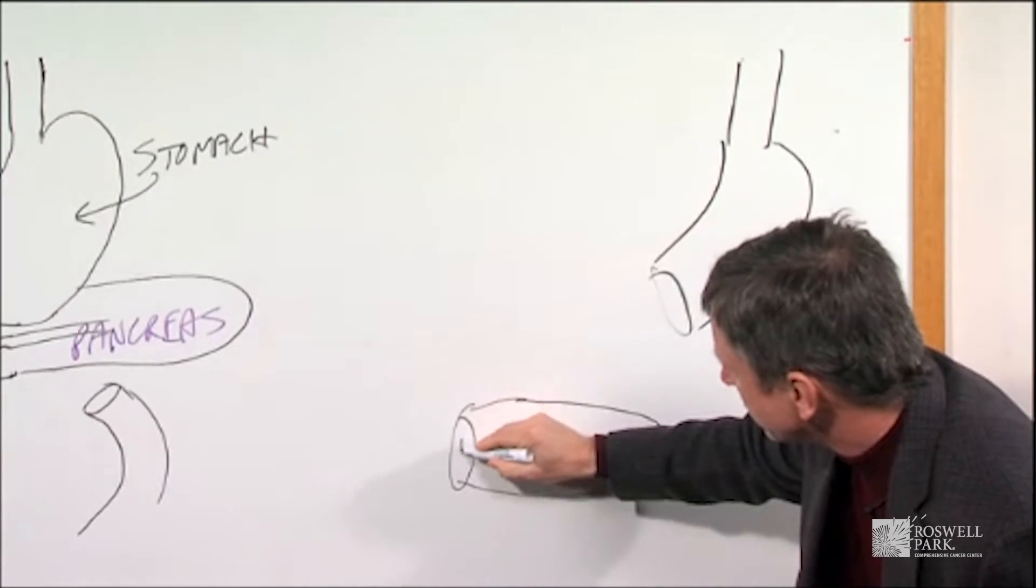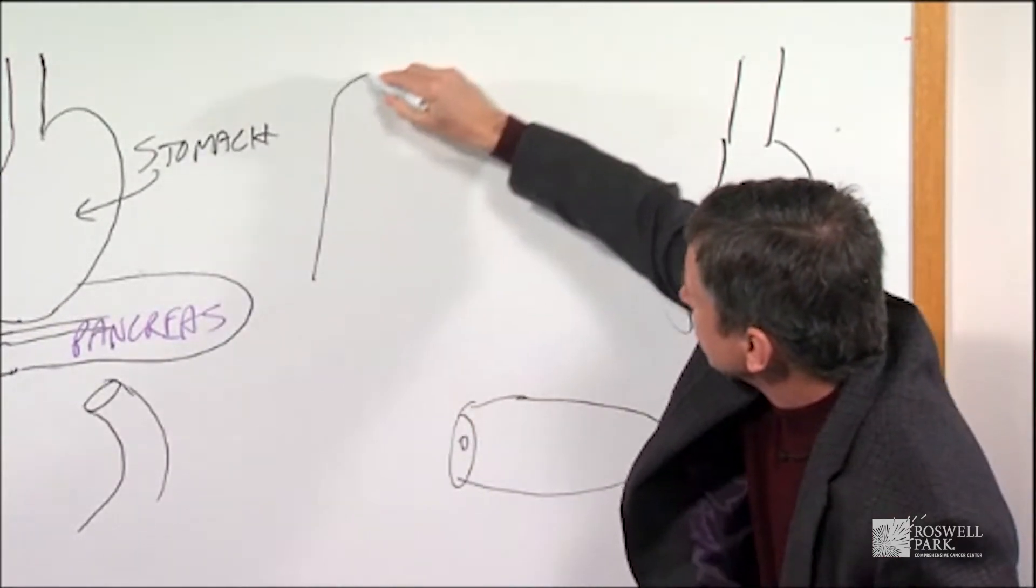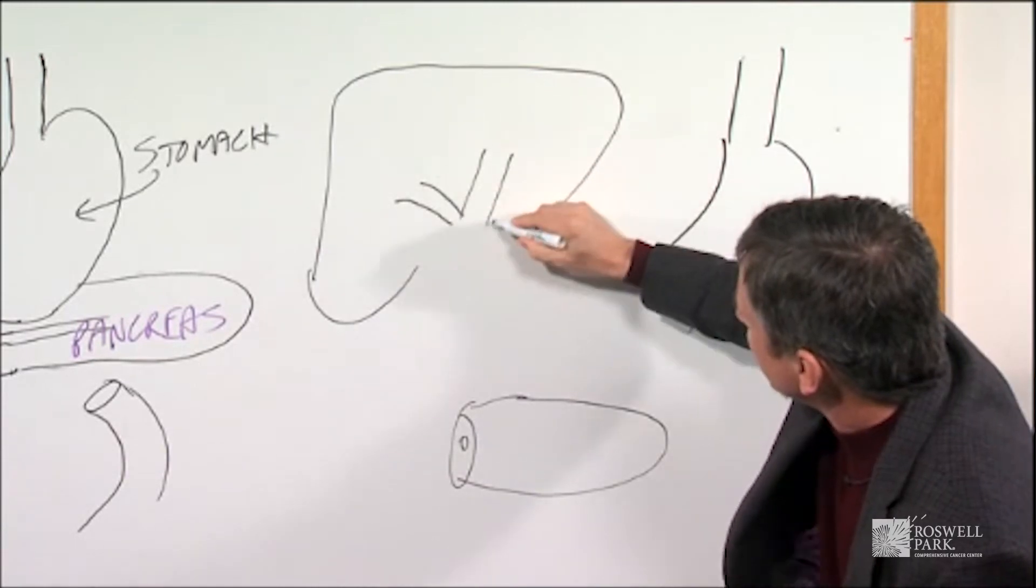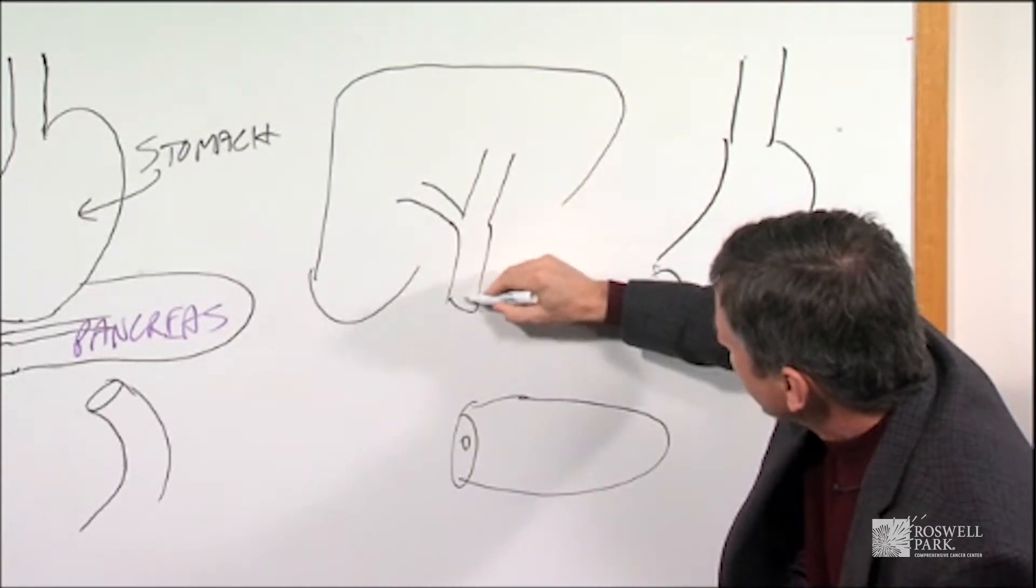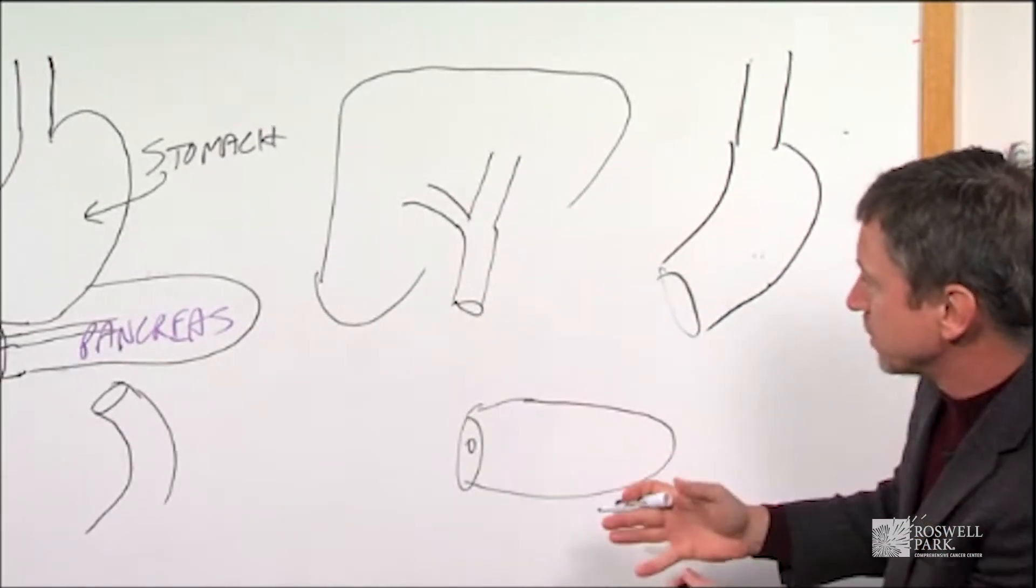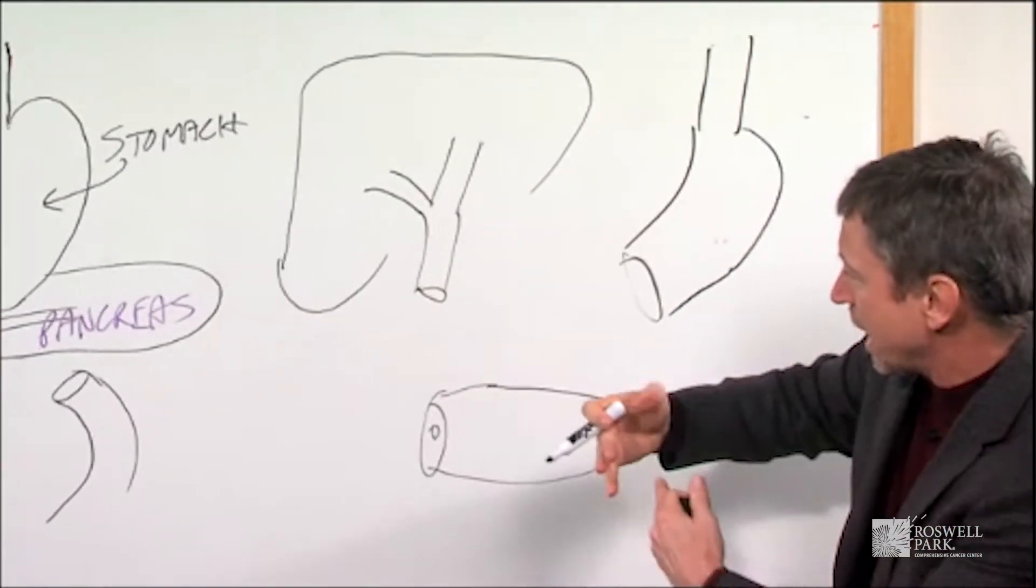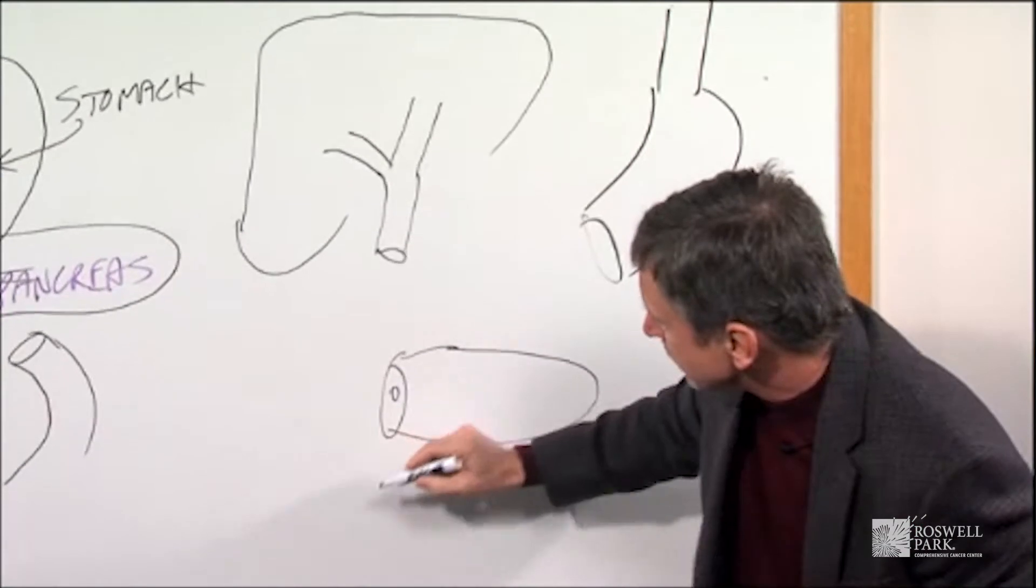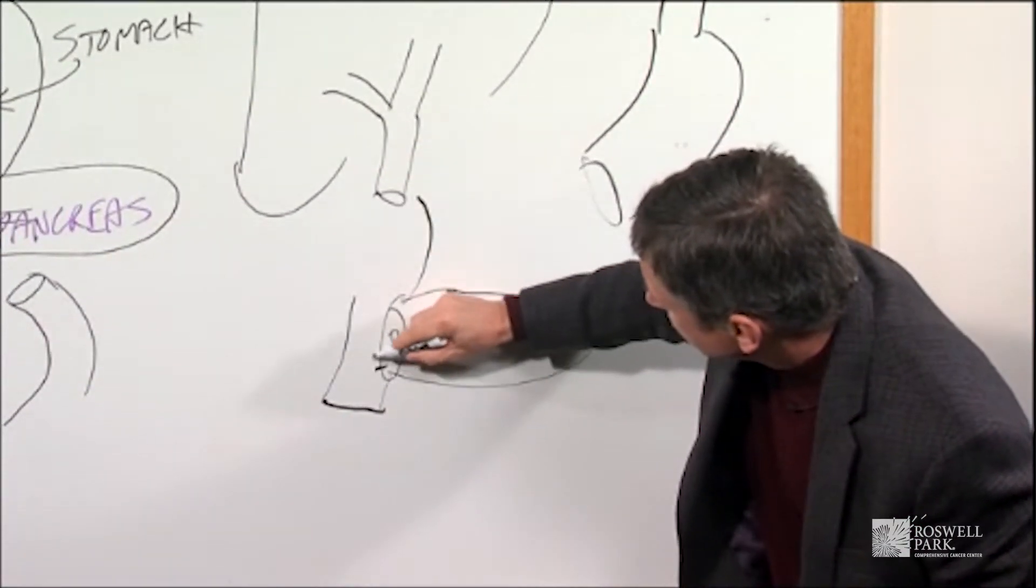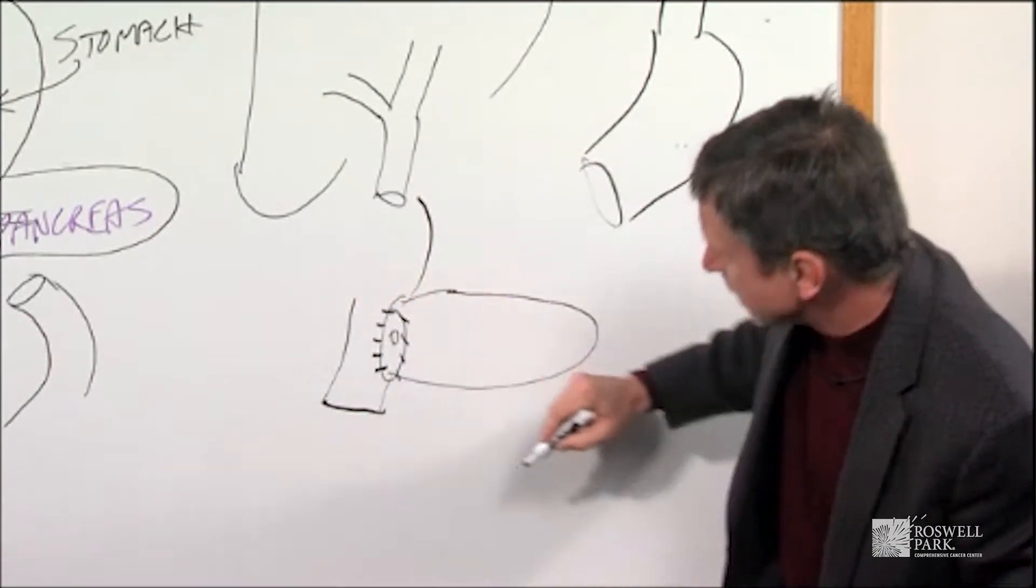So here's the pancreas and then the liver here and the bile duct. If you'll notice here, the intestine we're going to move forward because there's a gap there. So we're going to move this intestine forward and what's going to happen here is we're going to sew the pancreas to the intestine.